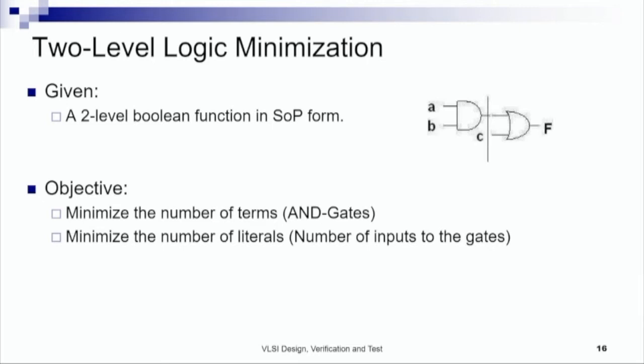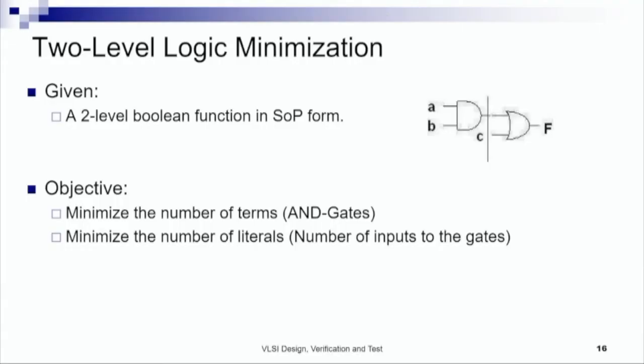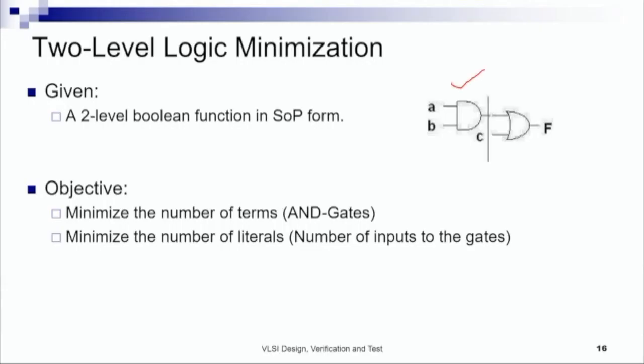Today we will discuss two-level logic minimization. Any Boolean expression can be represented by a two-level logic expression. There are two levels: the first level is an AND plane, and the second level is an OR plane. There will be numerous product terms and an OR gate which will sum up all the product terms together to realize the final function.